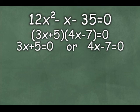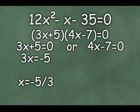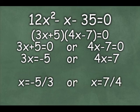And if we work on that left side first, we'll subtract 5 from both sides, get 3x equals negative 5, and then we'll divide by 3 and get x equals negative 5 thirds. Now to look at that right side, 4x minus 7 equals 0, we would add 7 to both sides to get 4x equals 7, and then we divide by 4 and get x equals 7 fourths.